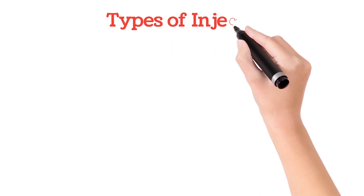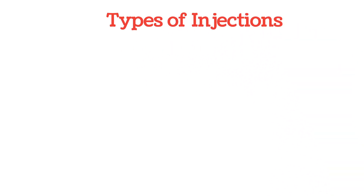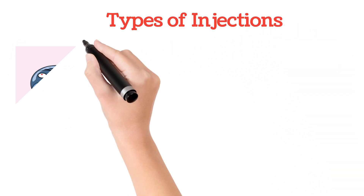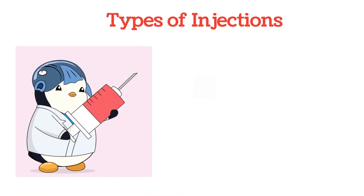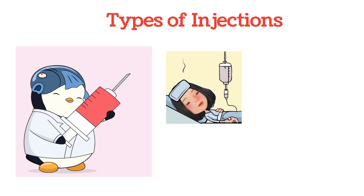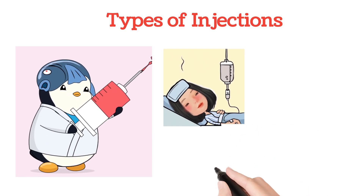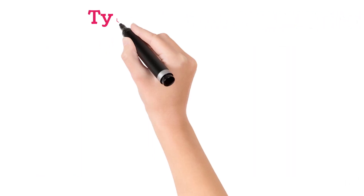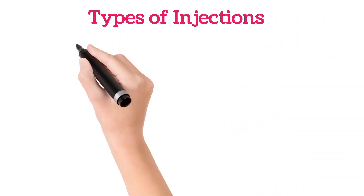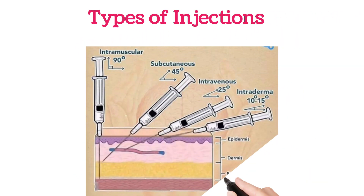Hello everyone, welcome to our channel. In this video, I am going to explain the different types of injections. Generally, injections help to deliver fluids, medicines and nutrients into the patient's body. There are various types of injections like intravenous, intramuscular, subcutaneous, intraosseous and intradermal.